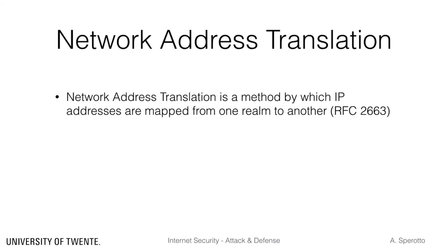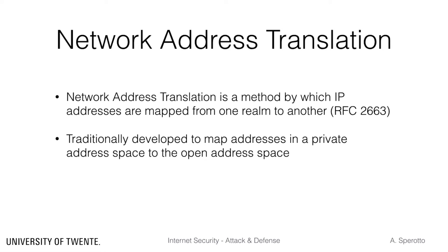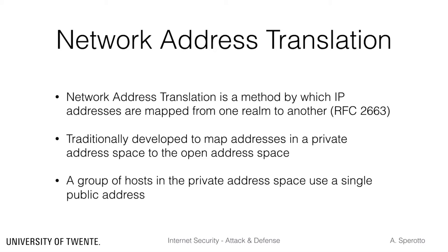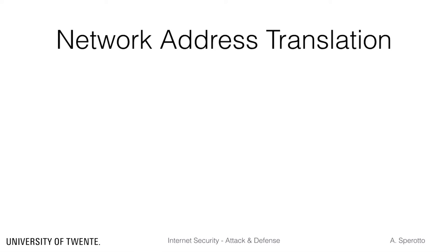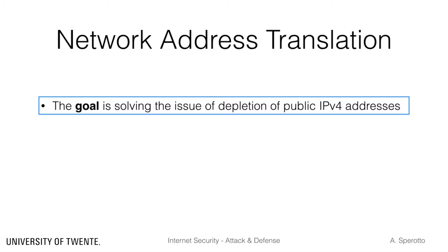Network Address Translator, or NAT, is a way to map an address from a certain subnetwork to another address. It was initially introduced for handling situations like customers changing their ISP without having to change their internal network configuration. Nowadays, it is typically used to map addresses in a private network to a single address on the open Internet. For example, if your network is implementing NAT, all the hosts in your home network will be reachable from the open Internet using a single IP address, namely the one that your ISP has assigned to your router.